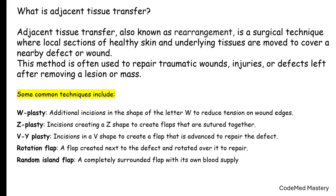Let's start with what is adjacent tissue transfer. Adjacent tissue transfer, also known as rearrangement, is a surgical technique where local sections of healthy skin and underlying tissues are moved to cover a nearby defect or wound. This method is used to repair traumatic wounds, injuries, or defects left after removing a lesion or mass. Some common techniques of ATT include W-plasty, where additional incisions in the shape of the letter W are made to reduce tension on wound edges.